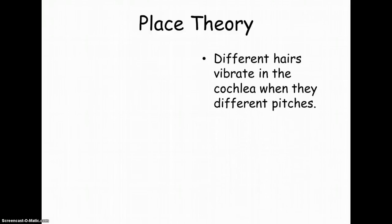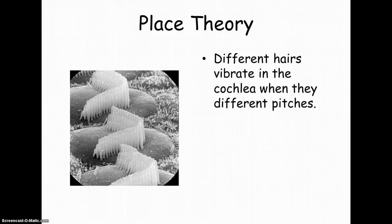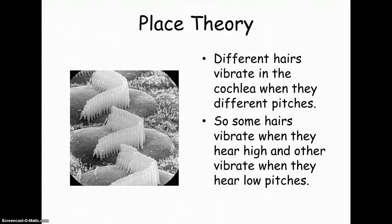Let's start with the place theory. If you consider the cochlea, the place theory states that different hairs vibrate in the cochlea when they hear different pitches. So if you think about the distance around the cochlea, this theory would state that some hairs vibrate when they hear really high pitches and others vibrate when they hear low pitches — so we have different hairs that perceive different types of pitches.